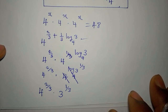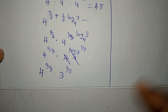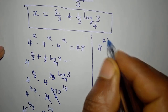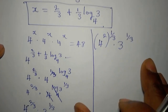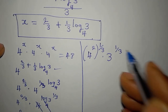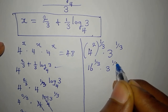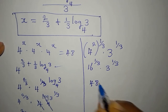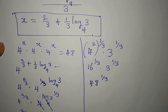I want to ensure they have the same power, so I write 4 to the power of 2 to the power of 1/3, which is 16 to the power of 1/3, then multiplied by 3 to the power of 1/3. Now we have the same powers, so we multiply 16 by 3 to get 48, giving us 48 to the power of 1/3.